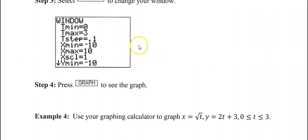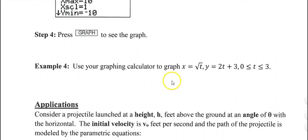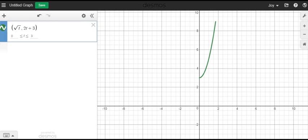Then you will press graph to see what your graph looks like. Since I do not have a program where I can see that on here, I'm going to go on. If you would like, use your graphing calculator for example 4 to graph X equals square root of T and Y equals 2T plus 3 for times between 0 and 3. I will let you pause to do that, but I will show you in Desmos.